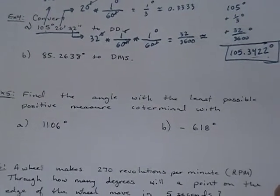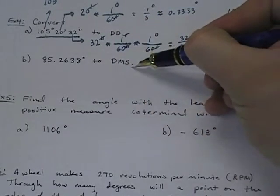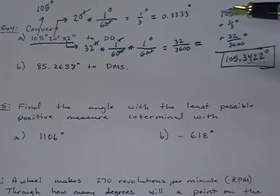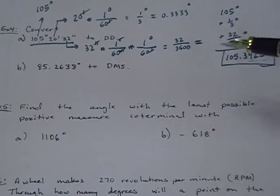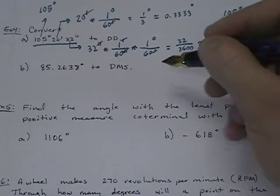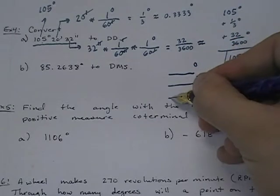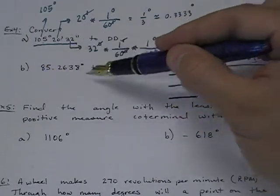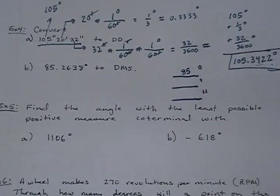Example B is basically the same problem, only this time I'm starting in decimal degrees and ending in degrees, minutes, and seconds. In part A I condensed three units down to one. In part B I start with one unit — degrees — and break it into degrees, minutes, and seconds, three different units. I look at this and immediately something jumps out: I have 85 point blah degrees, so I know I have exactly 85 whole degrees.